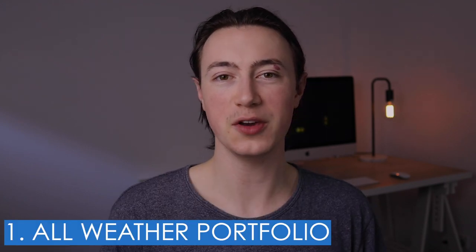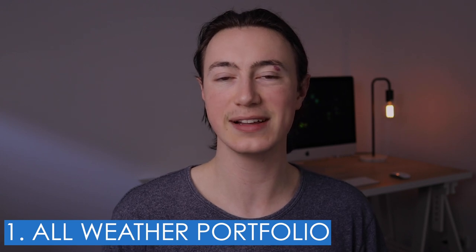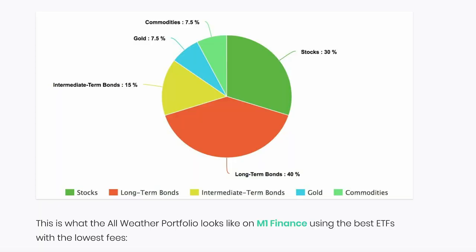Before I show you exactly how you can build the portfolio that Ray Dalio suggests, I first want to explain what it is and how it works. The All Weather Portfolio is relatively simple and has five major components: 40% long-term bonds, 30% stocks, 15% intermediate-term bonds, 7.5% gold, and 7.5% commodities.